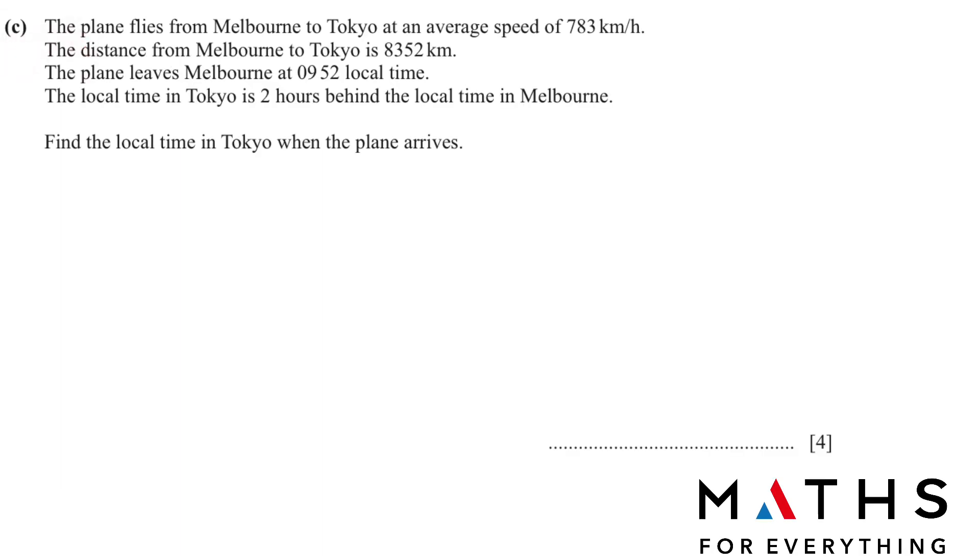Part C. The plane flies from Melbourne to Tokyo at an average speed of 783 km per hour. The speed is given to us. The distance from Melbourne to Tokyo is 8352 km. Distance is given to us. The plane leaves Melbourne at 9:52 local time. The local time in Tokyo is 2 hours behind the local time in Melbourne. Find the local time in Tokyo when the plane arrives. So the first thing we need to know is how much time does the plane take to reach.